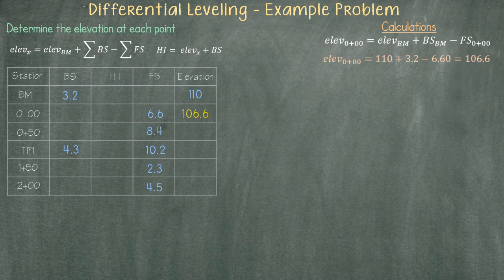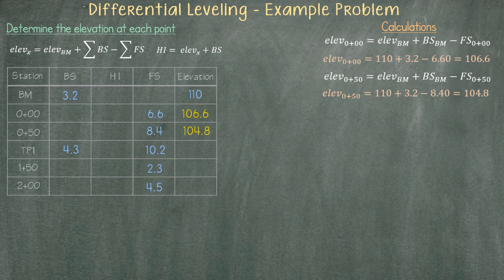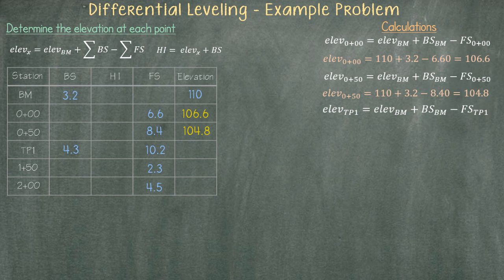Similarly, for station zero plus 50, we take the elevation at the benchmark and add the back sight at the benchmark minus the fore sight at station zero plus 50. Next, the elevation at turning point one is equal to the elevation at the benchmark plus the back sight at the benchmark minus the fore sight at the turning point.